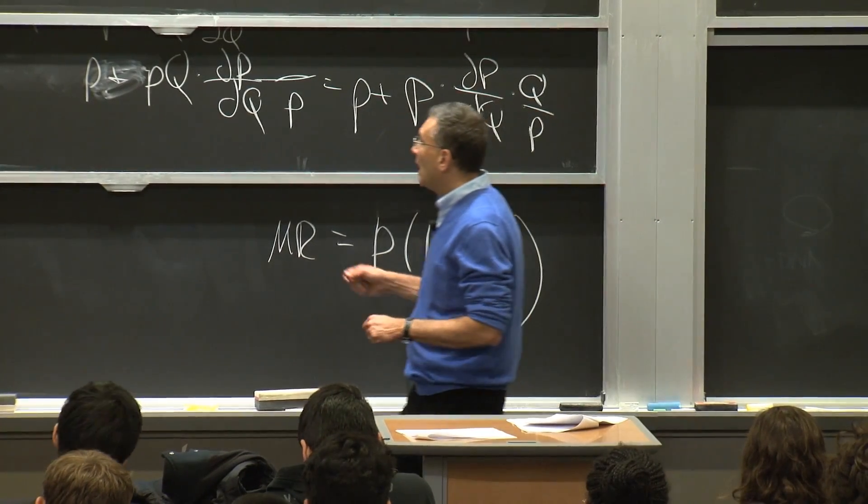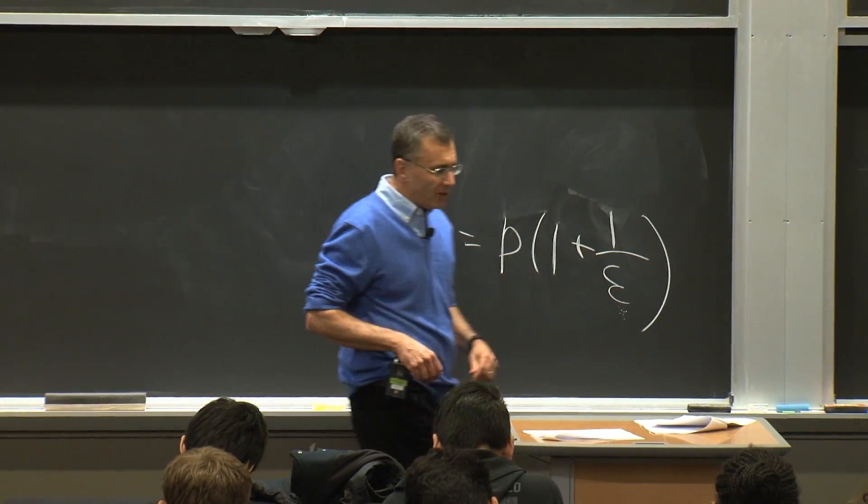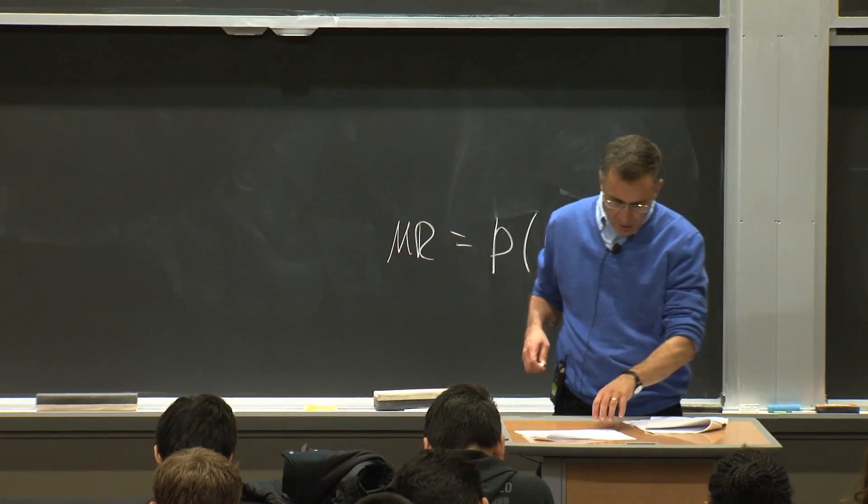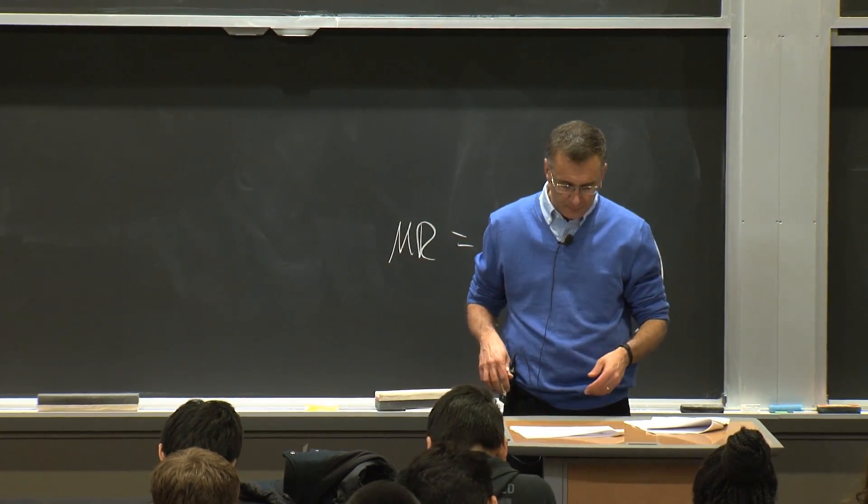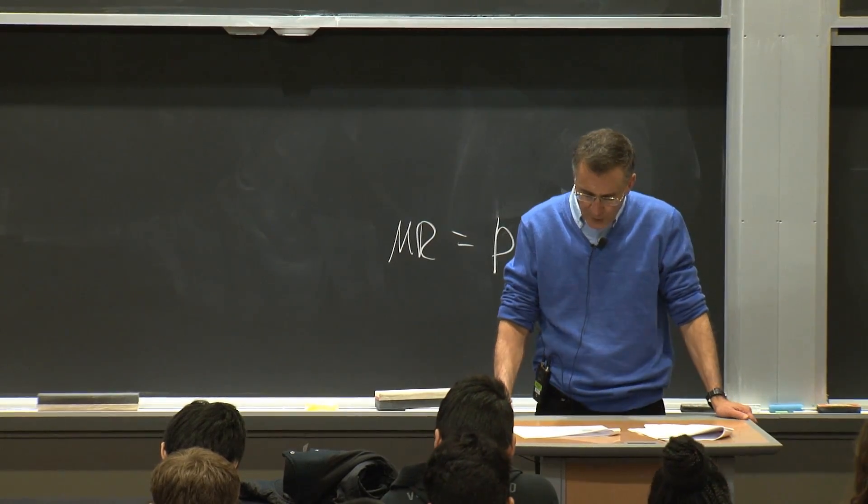Now let's take this and talk about how monopolists maximize profits. Let's talk about monopoly profit maximization. Go to figure 14.4, which is a bit busy. So let's slowly go through figure 14.4.